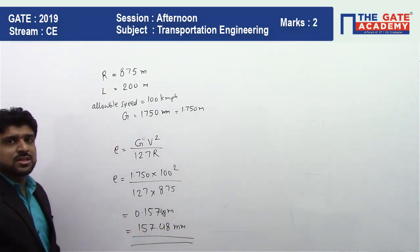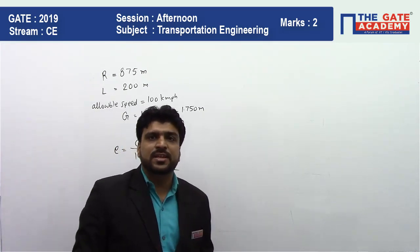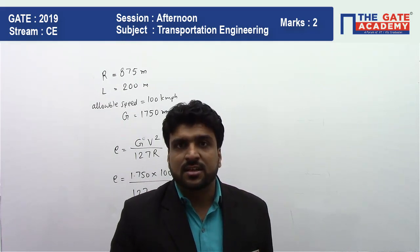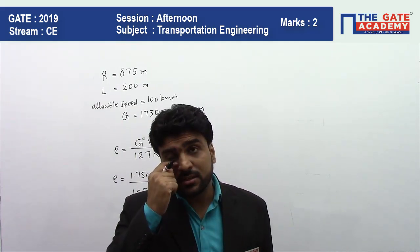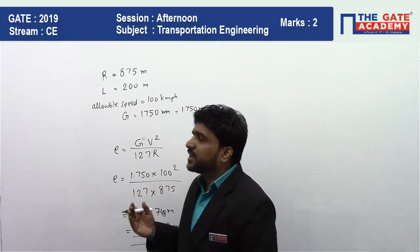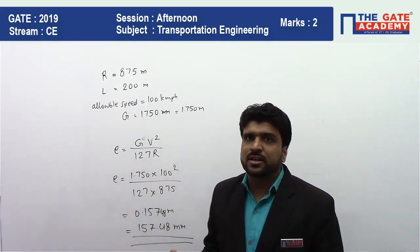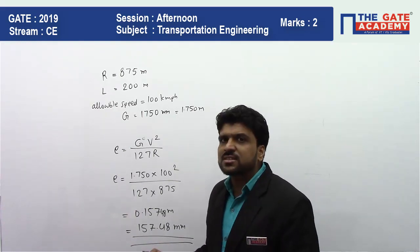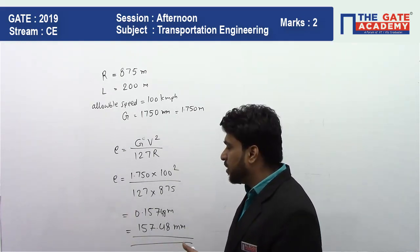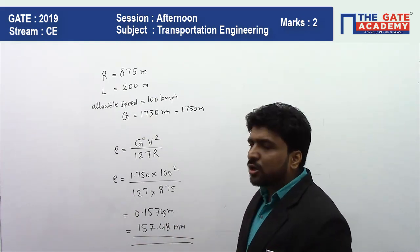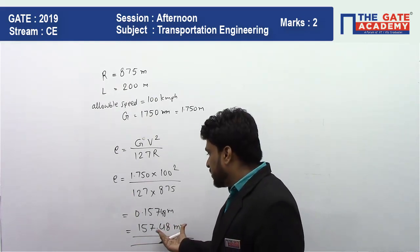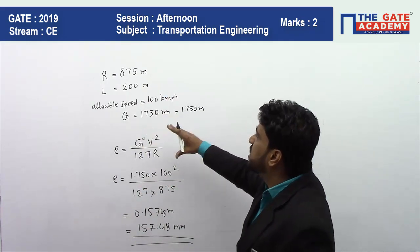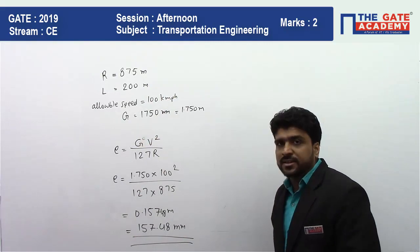Again, the question is for two marks but it was a very easy question. Nothing has been given about the cant deficiency, so we should not take that into the calculation. Otherwise, they would have written something like 'take the cant deficiency also into account' or mentioned a maximum cant deficiency value. They have just asked for the maximum cant which you can provide on this type of railway track whose radius is 875 meters and the speed is 100 kmph.